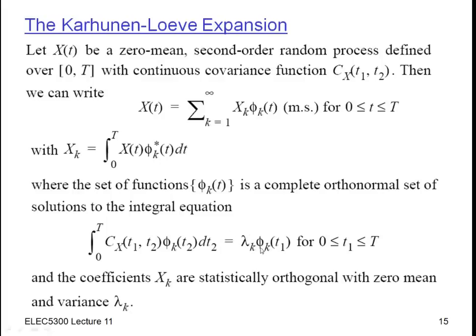Each phi sub k then determines a Karhunen-Loeve coefficient for that basis function. That's a random variable, a complex valued random variable, but it has a certain variance, and the variance is given by the lambda sub k. So I have to find not only the phi sub k's but also these variances lambda sub k. And I'll show you an example of how to do that in a later part.